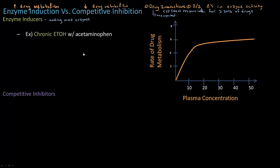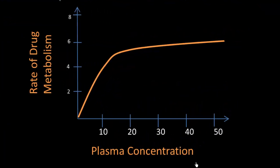With chronic alcohol use and acetaminophen, let's look at the enzyme kinetics graph. On the x-axis is plasma concentration and on the y-axis is the rate of drug metabolism. This is the standard enzyme kinetics graph from the previous lecture. The first part shows first-order kinetics — rate of metabolism is proportional to plasma concentration. The second part shows zero-order kinetics — it's independent.